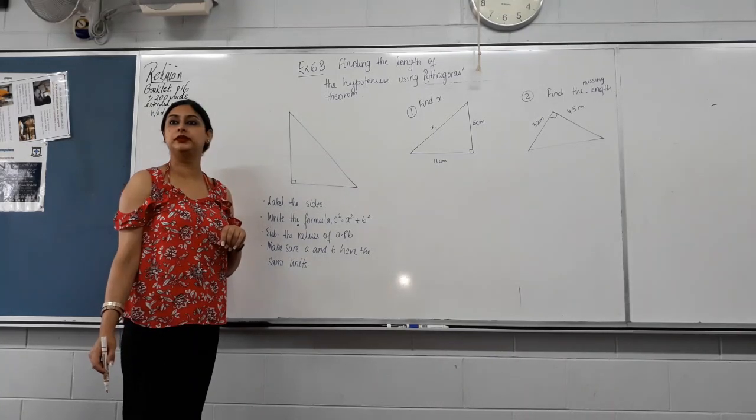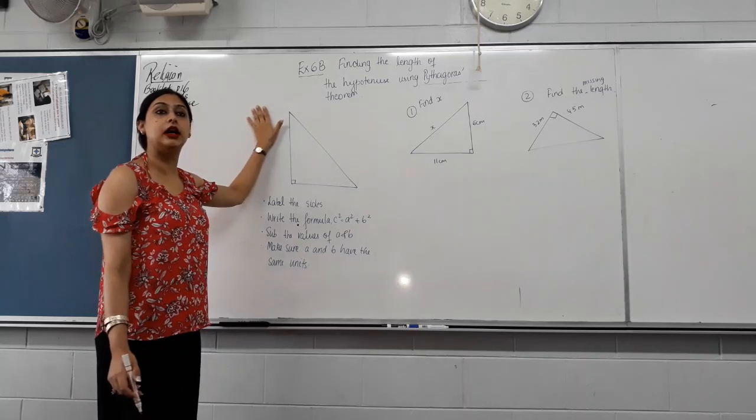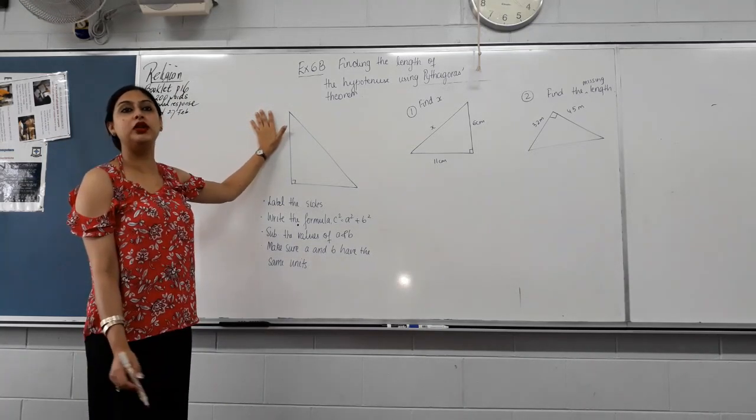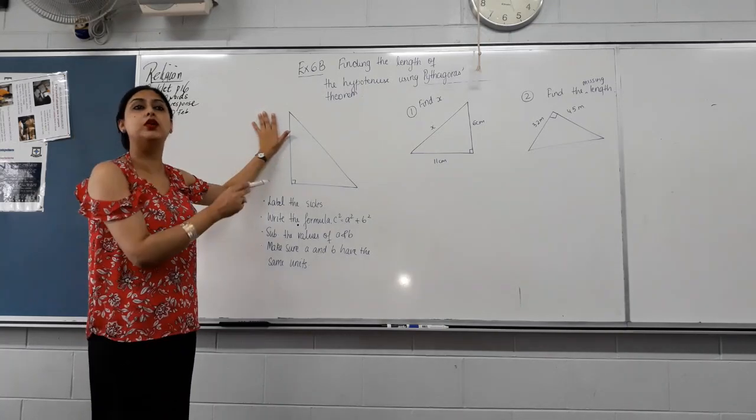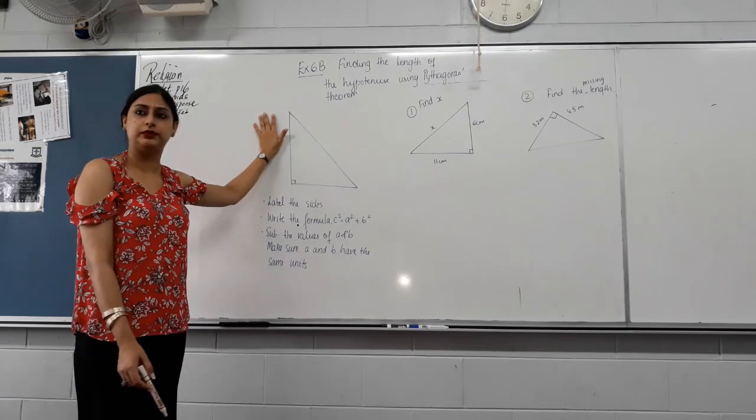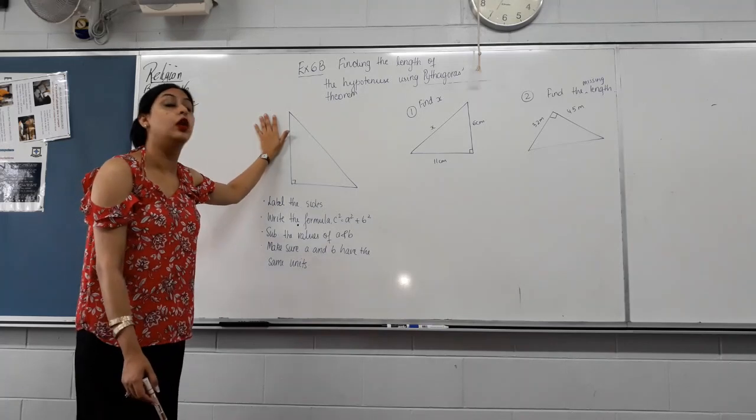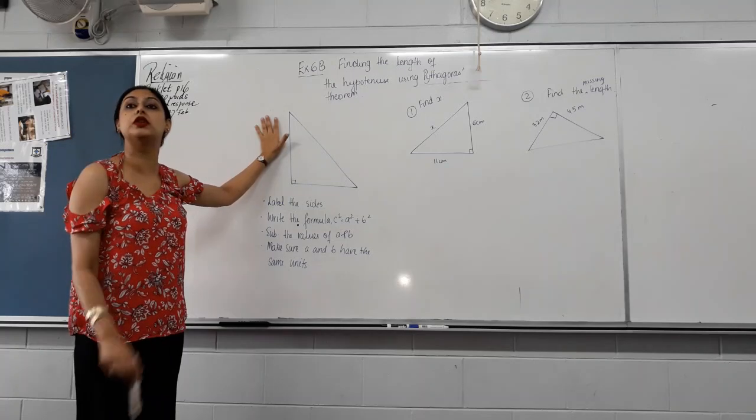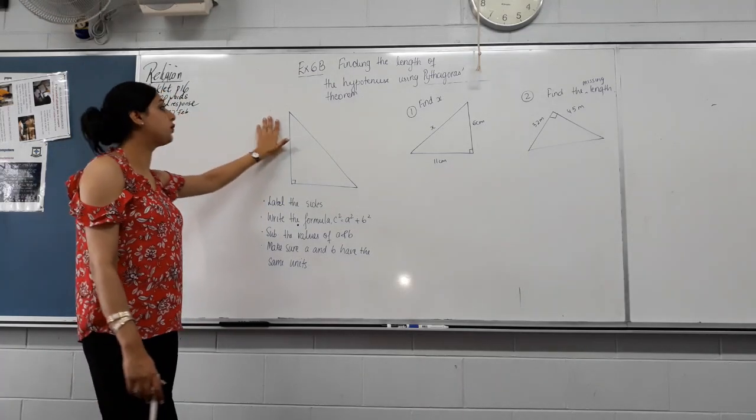Good morning, gentlemen. Okay, pens down now, listening. We did an introduction on Pythagoras in our last lesson. Today we're going to learn how to find the length of the hypotenuse using the Pythagoras' theorem. What was special about our hypotenuse? It was the longest side. And how do we know which one is the hypotenuse? What's the position, location? The opposite side of the right angle, that is right.